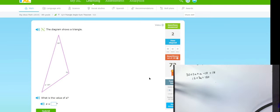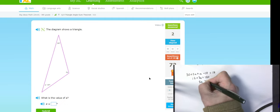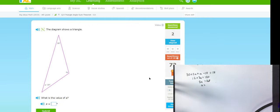That's 180. Subtract the 12 from both sides. 180 minus 12 is 168. It gives me 3A is 168. Divide both sides by 3. 168 divided by 3 is 56.